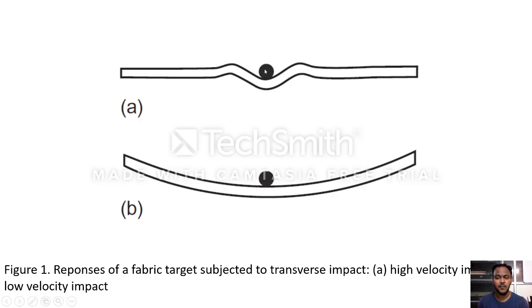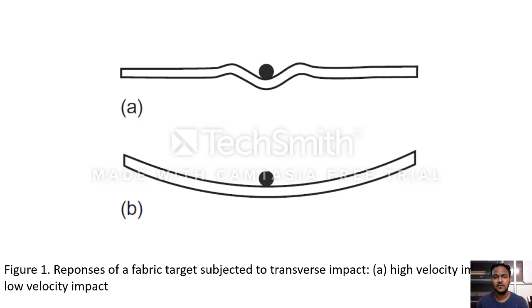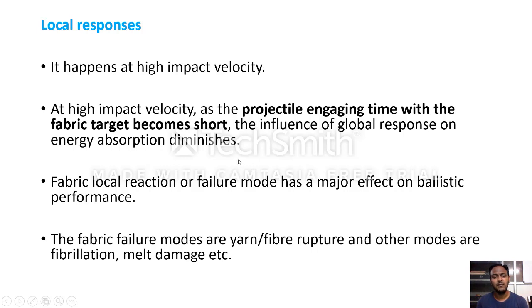The local response occurs at a high impact velocity. When the velocity is very high, the projectile engaging time with the fabric target becomes short, leaving no chance for a global response — the chance for local response becomes higher. The body armor can experience fabric failure through various modes. When the projectile strikes through the armor, there is some deformation and tent-type deformation occurs in the armor structure.